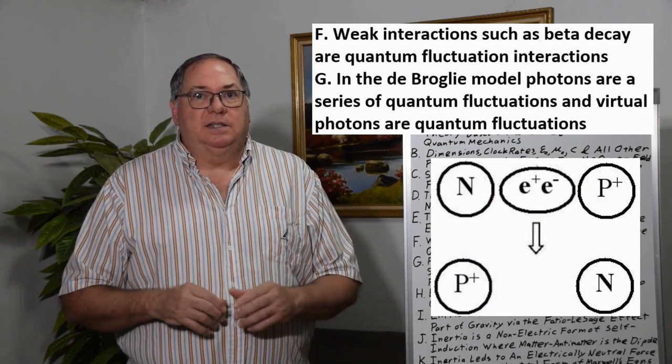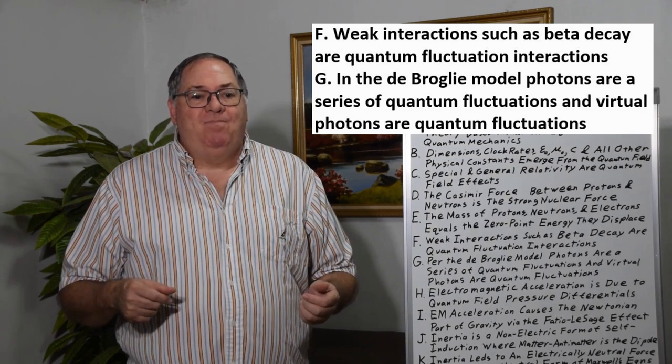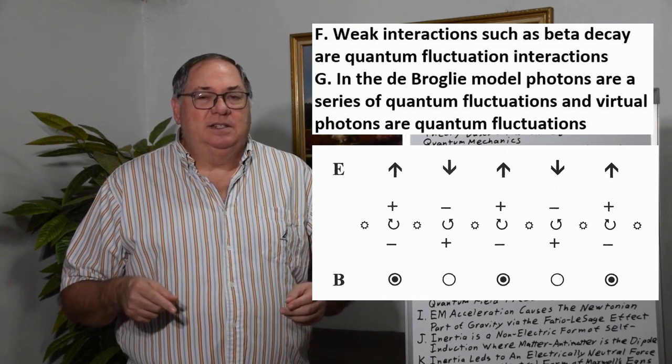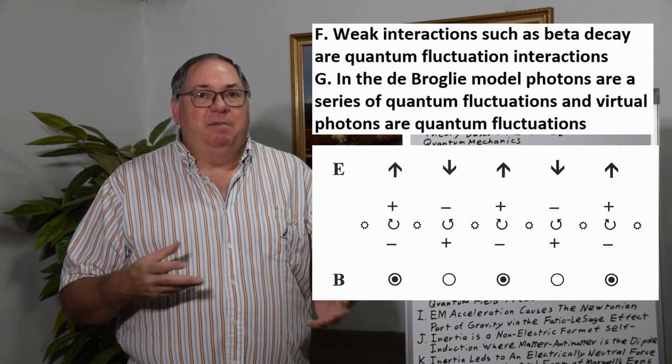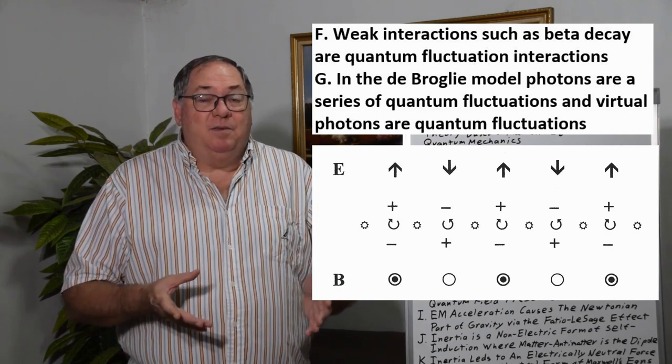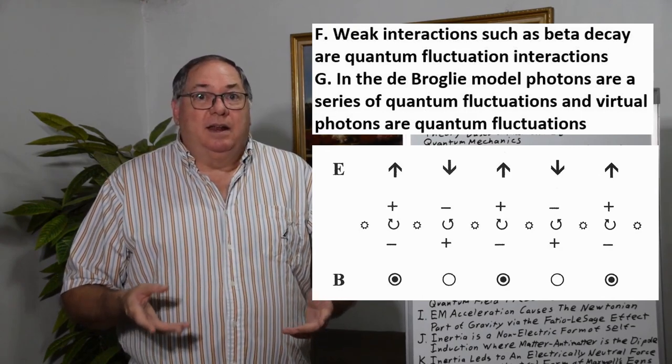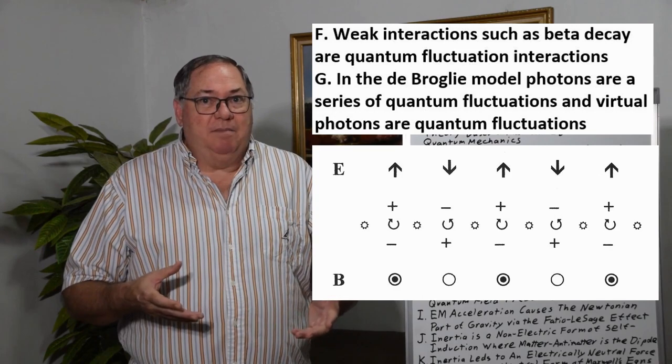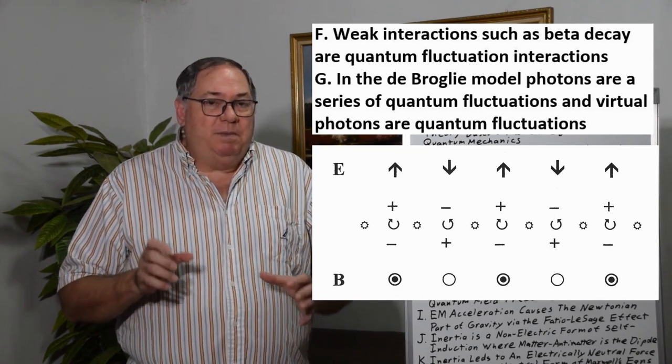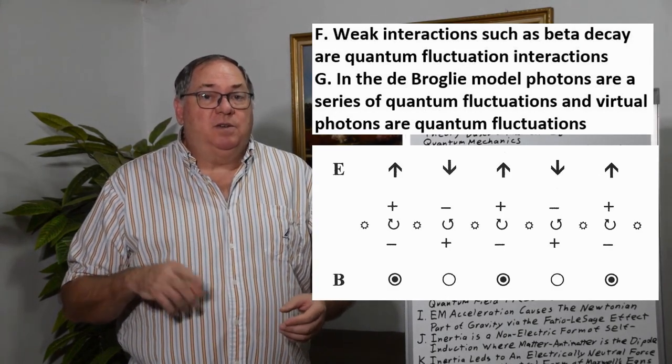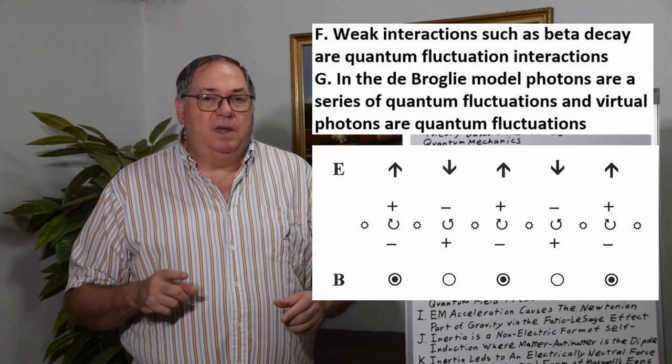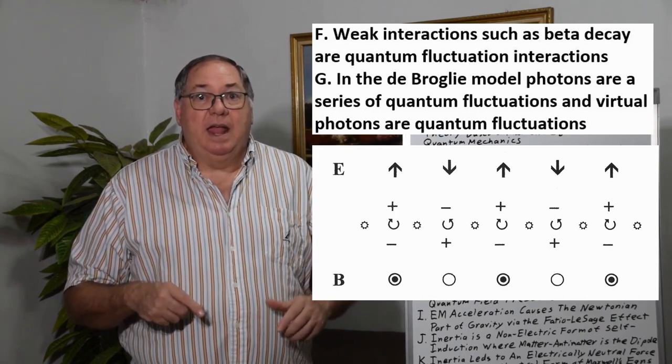All beta decay can be accounted for with variations of this type of quantum electron-positron effect. Ultimately, all weak interactions can be accounted for that way. Then we can talk about photons. Louis de Broglie, back in the 1930s, realized that in order to explain the polarization and the electric and magnetic field of photons, you needed an electric charge dipole, which he figured out must be a Dirac-type dipole, the electron-positron. It could be any Dirac-Fermion pair, even a proton-antiproton. So it would be a series of these quantum fluctuations. A virtual photon would just be a single quantum fluctuation of an electron-positron pair. If we use this model, we get a much better understanding of photon interactions and the fields they cause.